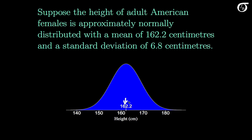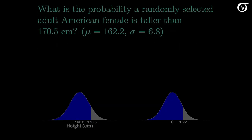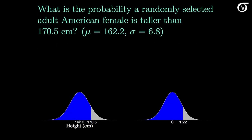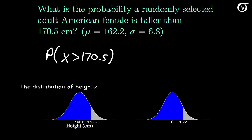The normal distribution is a symmetric distribution, so the mean and the median are equal. Suppose we want to know the probability a randomly selected American female is taller than 170.5 cm. If we let the random variable X represent the height of a randomly selected female, then we are interested in finding the probability that X takes on a value bigger than 170.5 — simply the area to the right of 170.5 under the distribution of heights.